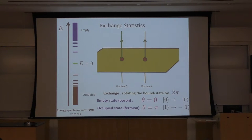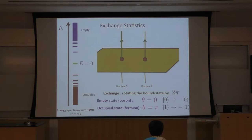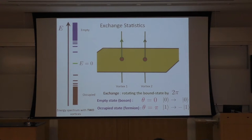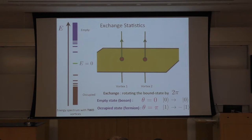So what happens if I exchange vortex one and two? Exchanging vortex one and two is equivalent to rotating this zero mode between them by two pi. If the zero mode is unoccupied — it's a boson — and if I take a boson around itself, it doesn't change phase. But if I have a fermion in the zero mode, then rotating it by two pi around itself gives a negative sign because it's a fermion. So I have two different situations, and the answer depends on the occupation of this zero mode. Because of that, I get a non-abelian statistic.